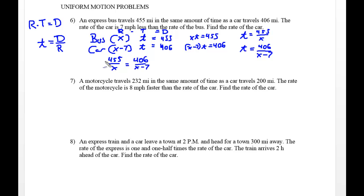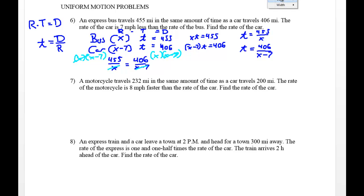To solve this, I multiply both sides by the lowest common denominator — also known as cross multiplication. I multiply both sides by x and x minus 7 in the numerator, which clears the denominators and simplifies. On the left side, 455 is being multiplied by the binomial x minus 7, giving us 455x minus 3185. The 406 gets multiplied by x, giving 406x.